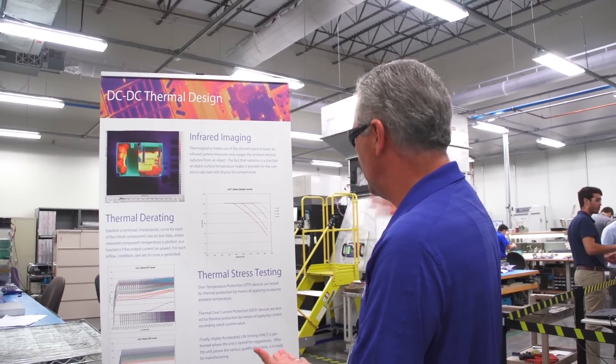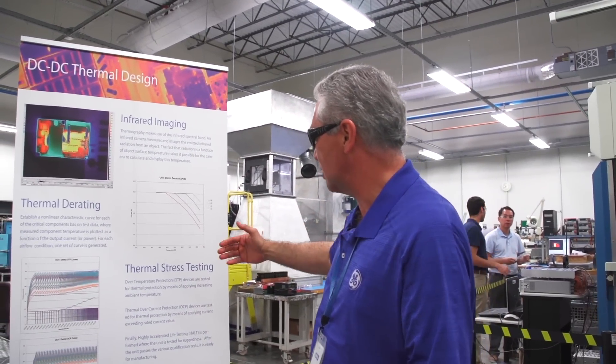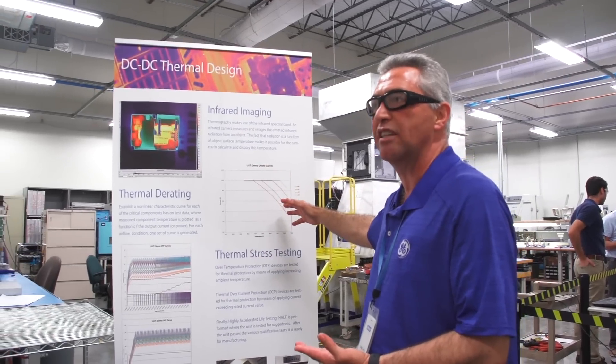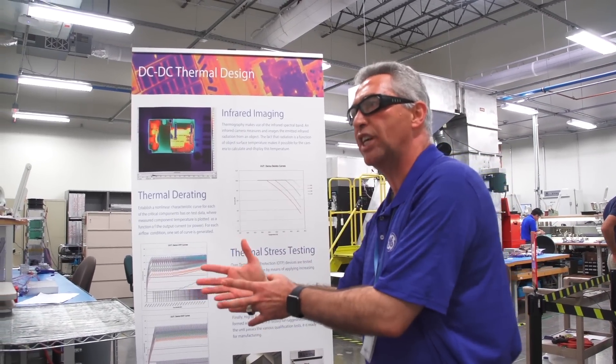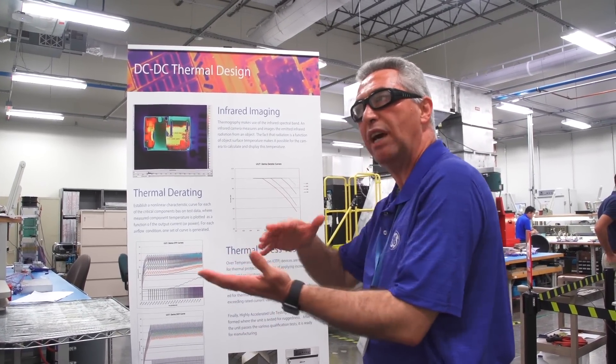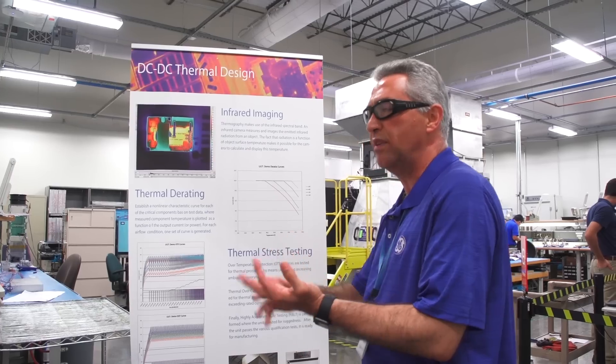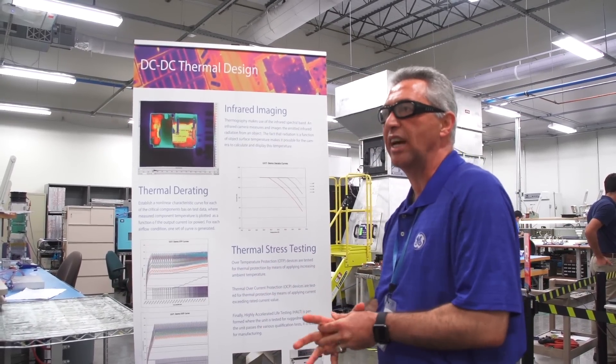So what our guys do, using a wind tunnel testing that I will show you, is to provide derating curve for the customer that tells them, this is how much power you can get at this ambient temperature if you have this airflow. And we test at 200 feet per minute, 400 and 800 feet per minute for each test.